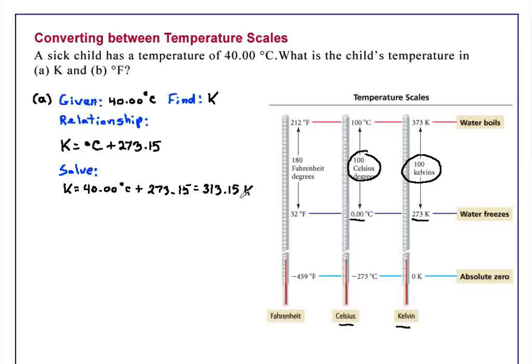Now, Part B, we are once again going to go back to our initial information that we have a temperature of 40.00 degrees C. But in this case, we want to find the temperature in degrees Fahrenheit.